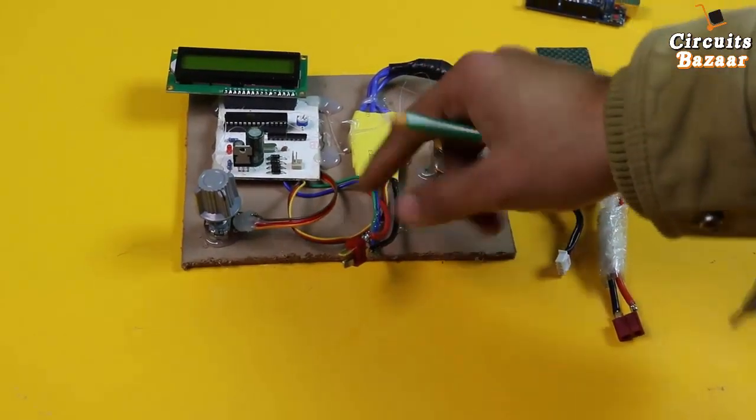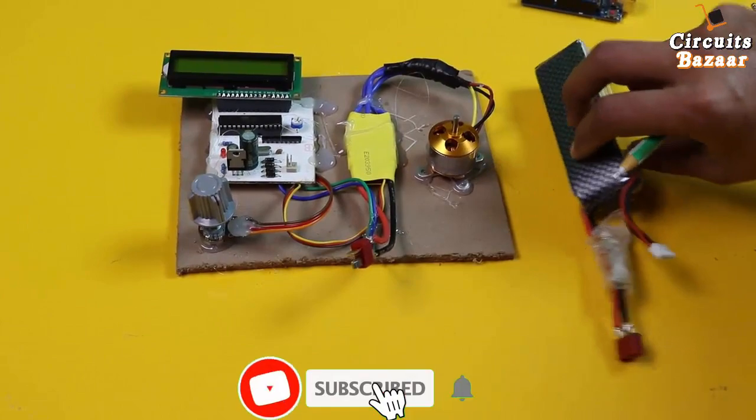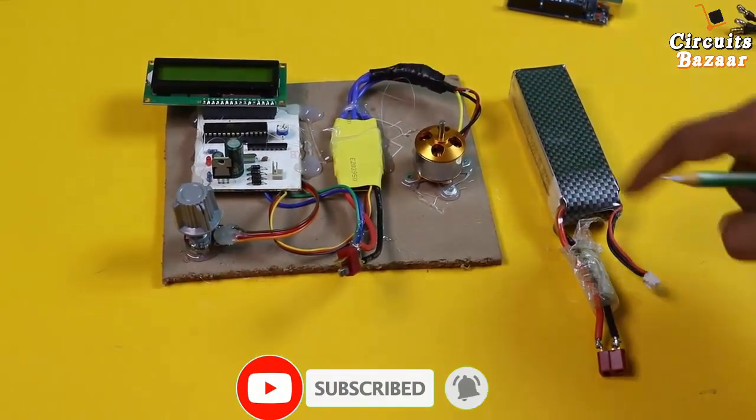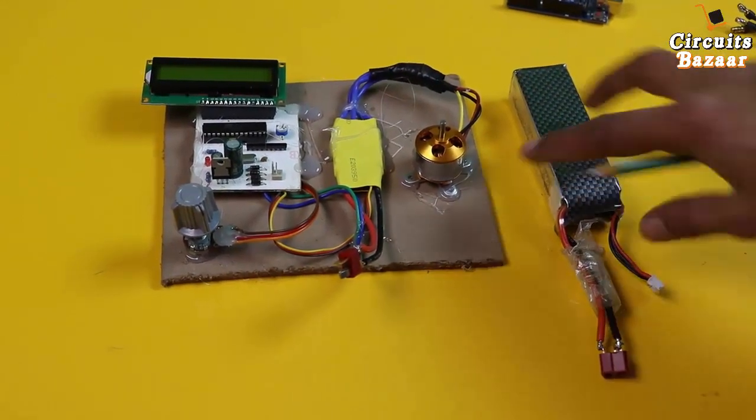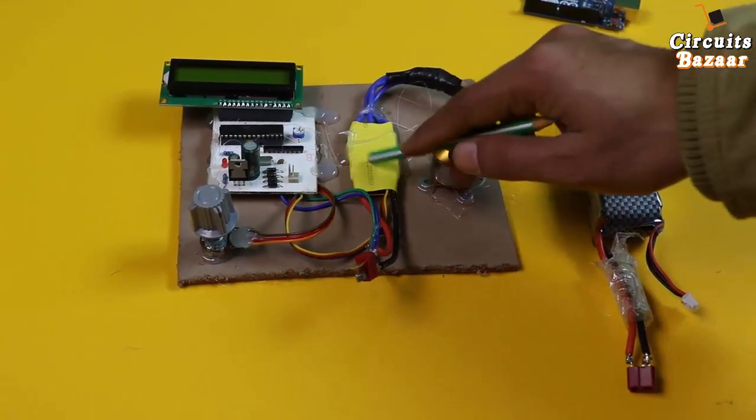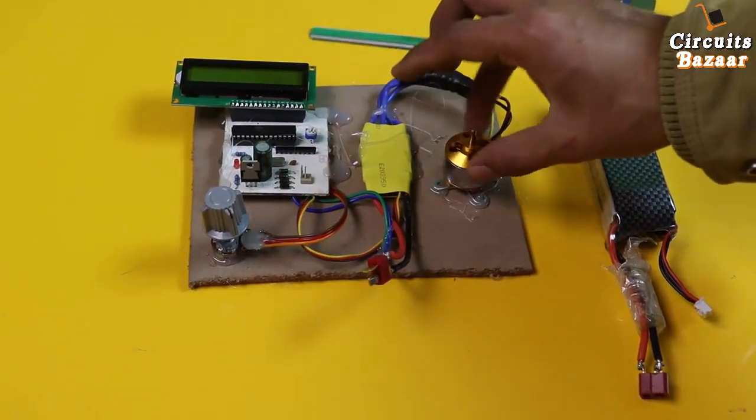This is the ESC and this is the battery connection. We're using a LiPo battery because it can provide high current and the voltage is fixed - even when discharging, the voltage remains stable. This is a 30A ESC and this is a simple BLDC motor.